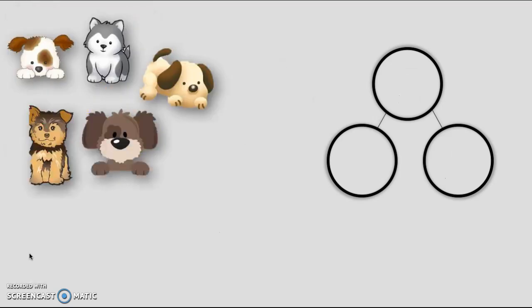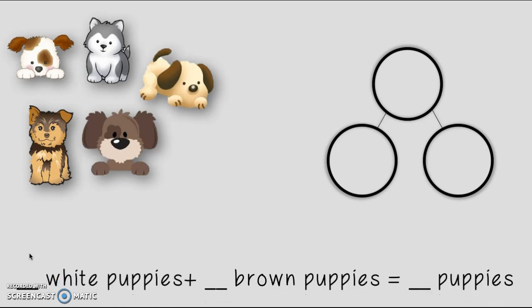Here we go. Oh look at these puppies. They're so cute. Do you agree? Which one's your favorite? I can't pick a favorite. They're too cute. Okay so here we go. Let's take those cute babies and we're going to write a number sentence. This one says blank white puppies plus blank brown puppies equals blank puppies.